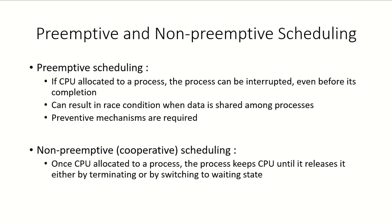Scheduling can be of two types: preemptive or non-preemptive. In preemptive scheduling, if the CPU is allocated to a process, that process can be interrupted even before it has completed. A process running on the CPU that has not finished its CPU burst can still have the CPU taken away and assigned to some other process.